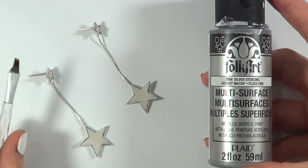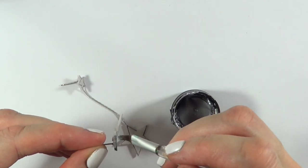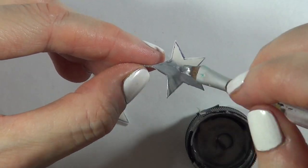Then I'm going to be painting them first with this silver acrylic paint and brush. I'm going to be painting all the stars in front, back, sides, everything.